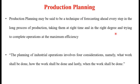The planning of industrial operations involves four key considerations: what kind of work shall be done, how the work shall be done or what methods will be followed to complete the work, and lastly, when the work shall be done — at what time. These are the various important terms in production planning.